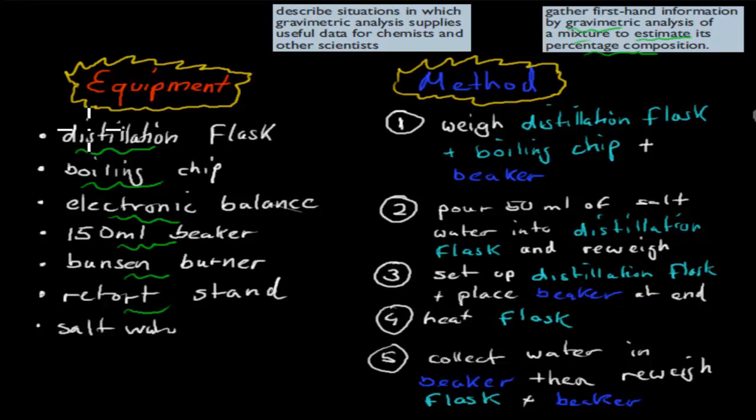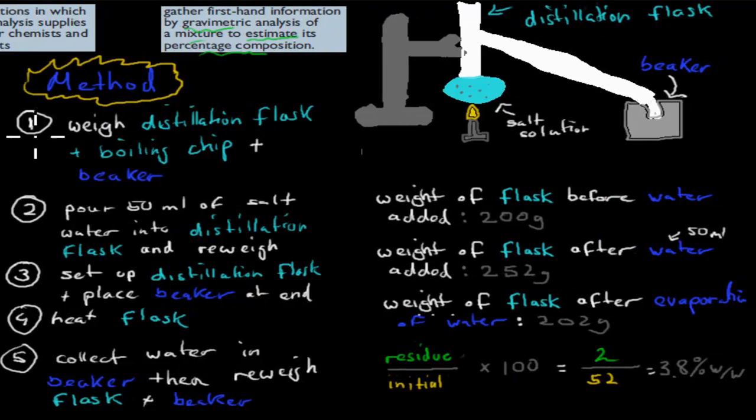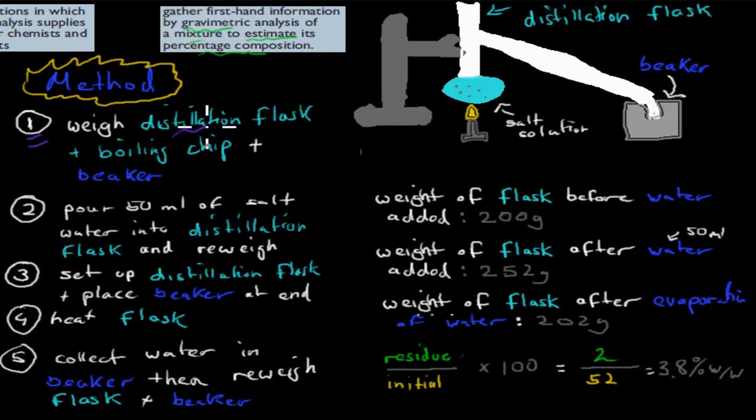So these are the steps you would have done. The first step was to weigh the distillation flask and the boiling chip. And this was before you put anything into it. So you weighed the distillation flask with the boiling chip plus the beaker. So let's say that this is for the flask. The flask, before you put anything into it, weighed 200 grams. That was the first step.